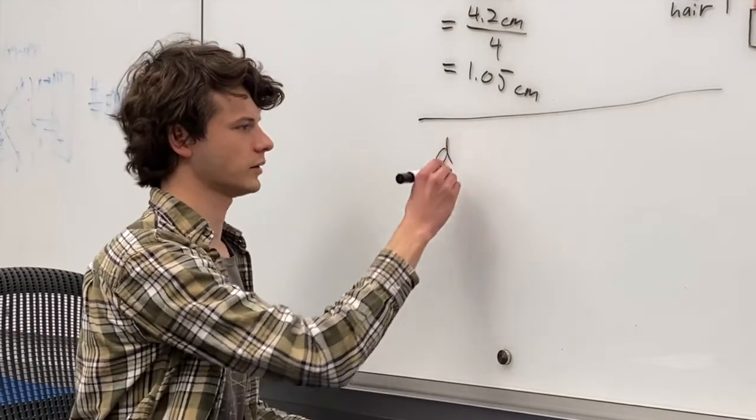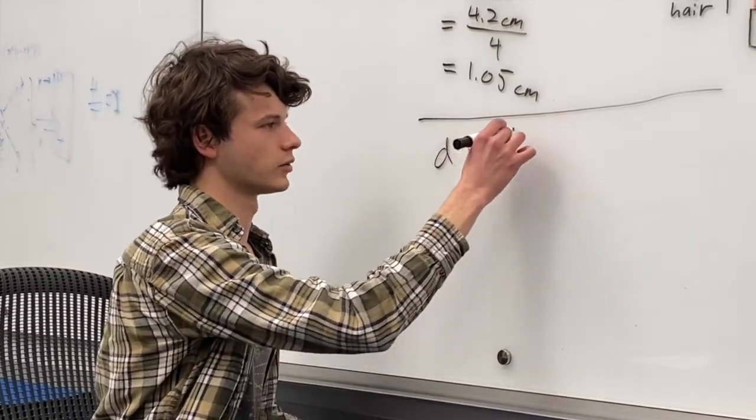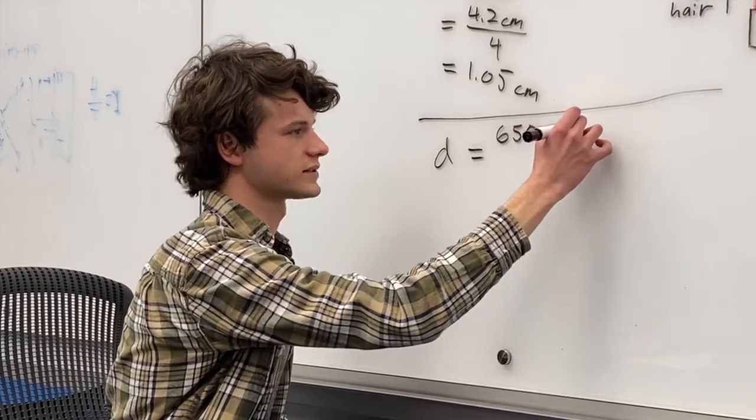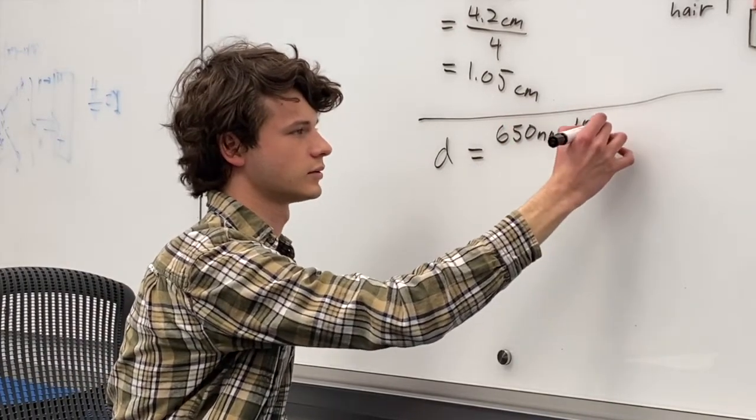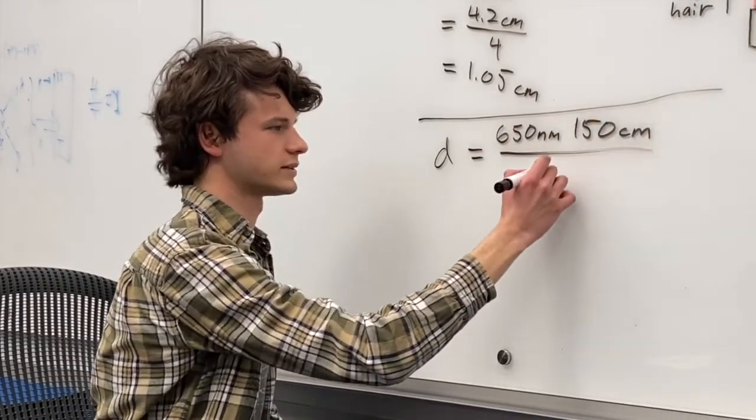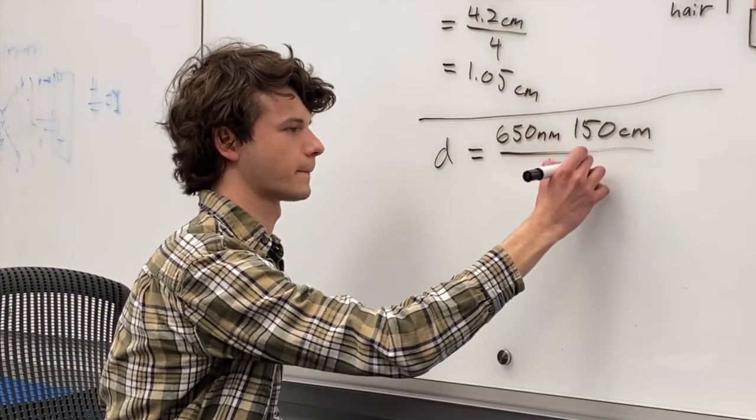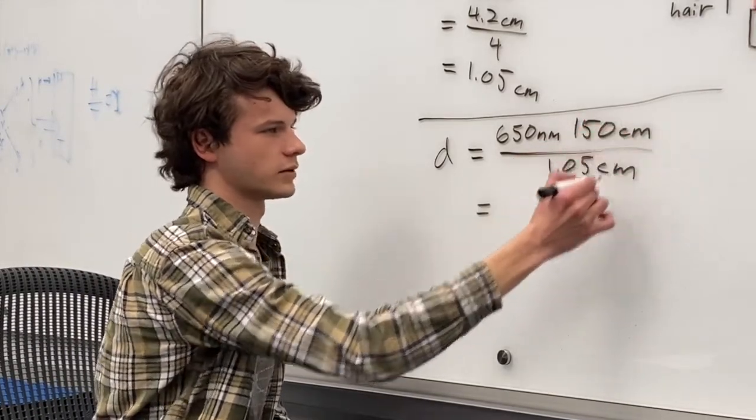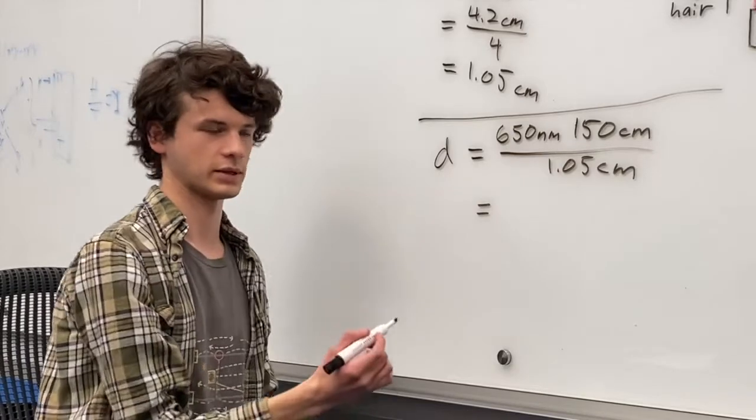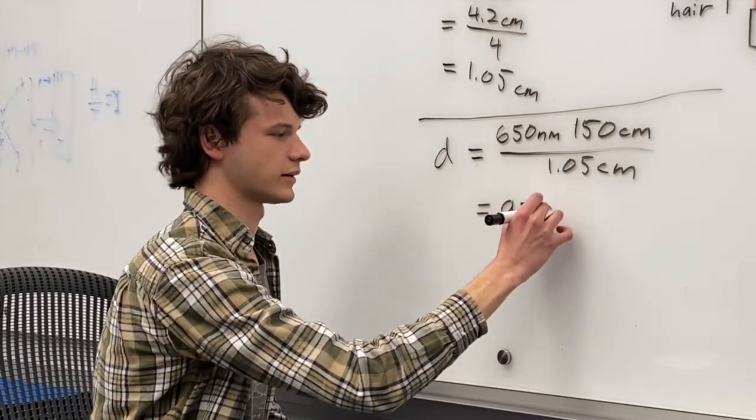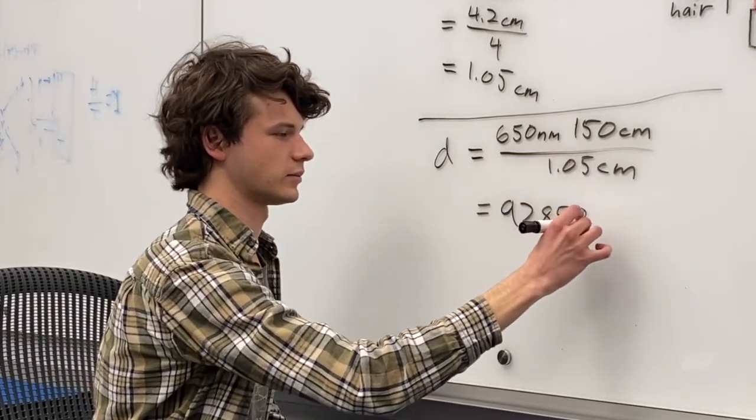So the diameter, little d, is going to be the wavelength times the distance to the screen divided by the distance between two dots. Your centimeters are going to cancel out and your answer is going to be in nanometers. And my hair was about 92,857 nanometers.